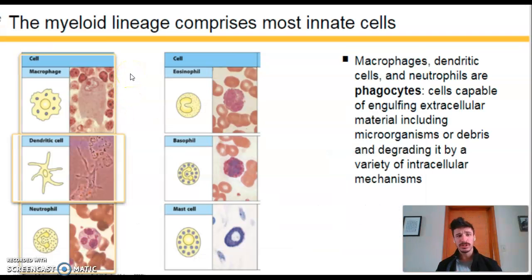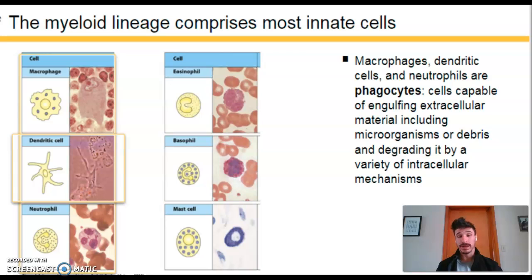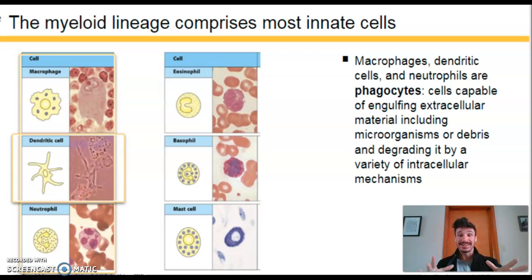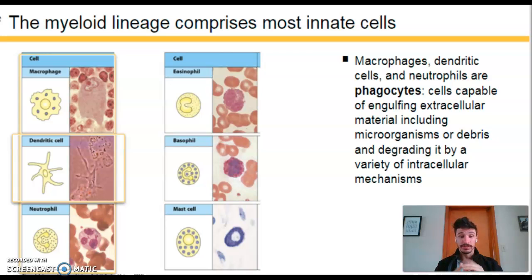The main focus of this screencast is macrophages and dendritic cells — the two most important innate immune cells for our understanding. Both are phagocytes, meaning they engulf invading pathogens or microbes into a phagosome. The phagosome's increased acidity causes disassociation, destabilizing and breaking down the microbe — essentially denaturing it.